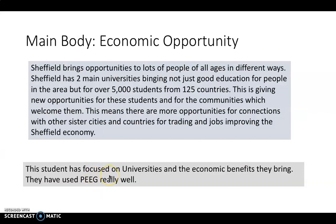Now let's look at a couple of paragraphs as examples of different ways people have written their answers — all of these are good in their own way. This first student looked at an economic opportunity, specifically Sheffield's universities. Their paragraph reads: 'Sheffield brings opportunities to lots of people of all ages in different ways. Sheffield has two main universities, bringing not just education for people in the area, but for over 5,000 students from 125 countries. This is giving new opportunities for the students and for the communities which welcome them, meaning more opportunities for connections with sister cities and countries for trading and jobs, improving the Sheffield economy.'